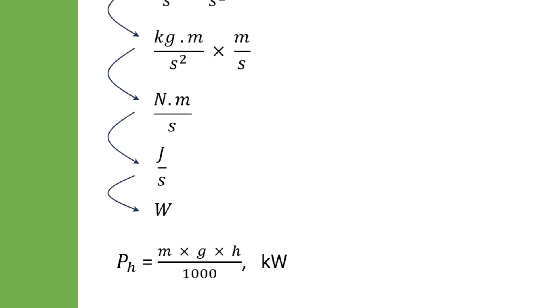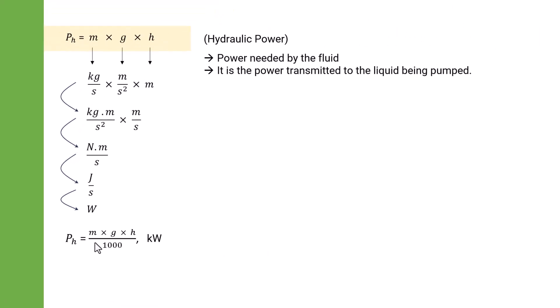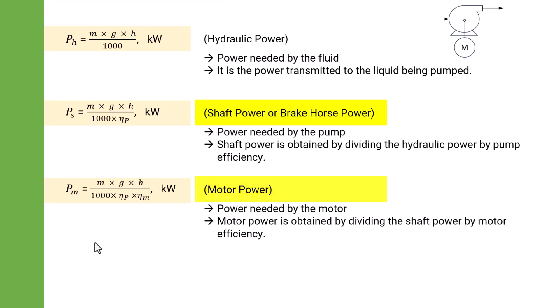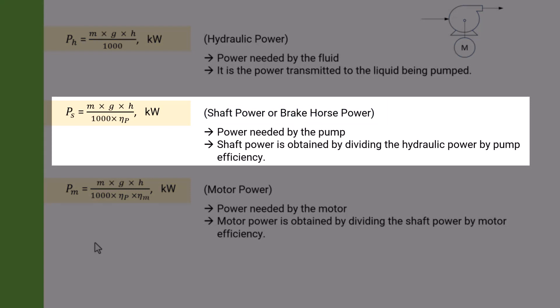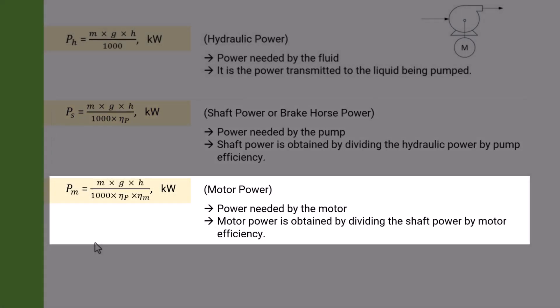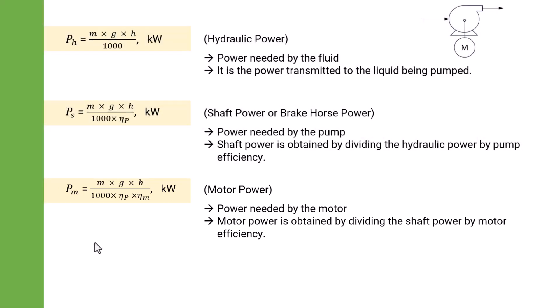Note that hydraulic power does not account for pump efficiency or motor efficiency. To account for those we have shaft power and motor power. Shaft power, also known as brake horsepower, is the power needed by the pump. It is obtained by dividing hydraulic power by pump efficiency. Motor power is the power needed by the motor, obtained by dividing shaft power by motor efficiency. This is the actual electricity consumed by the motor to run the pump. Now let's use these formulas in an example.